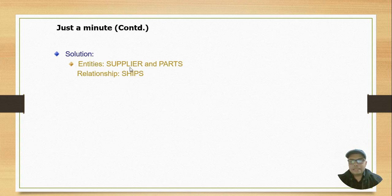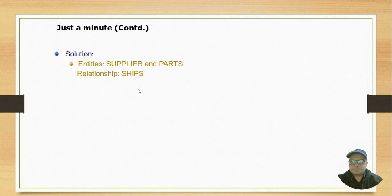Here's the solution: entities are SUPPLIER and PARTS, and the relationship is SHIPS. The three types of relationships are one-to-one, one-to-many (or many-to-one), and many-to-many relationship.